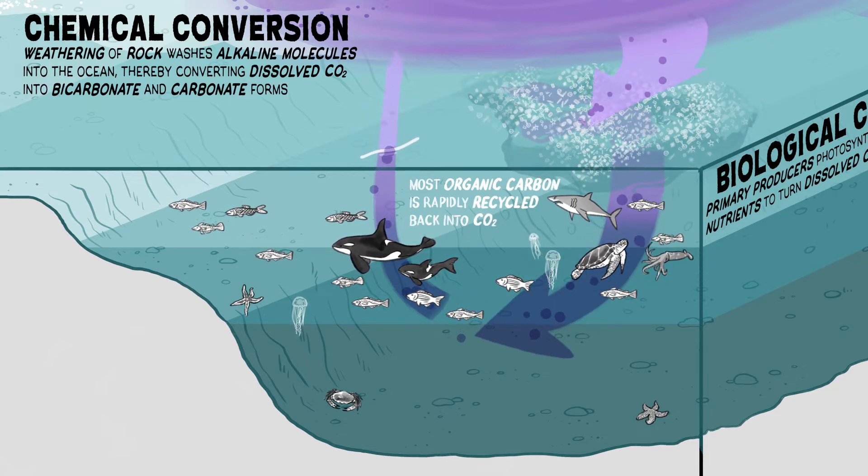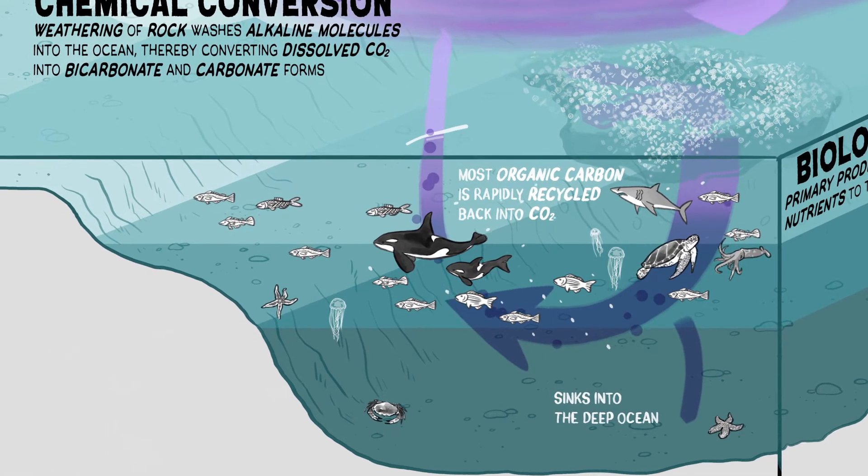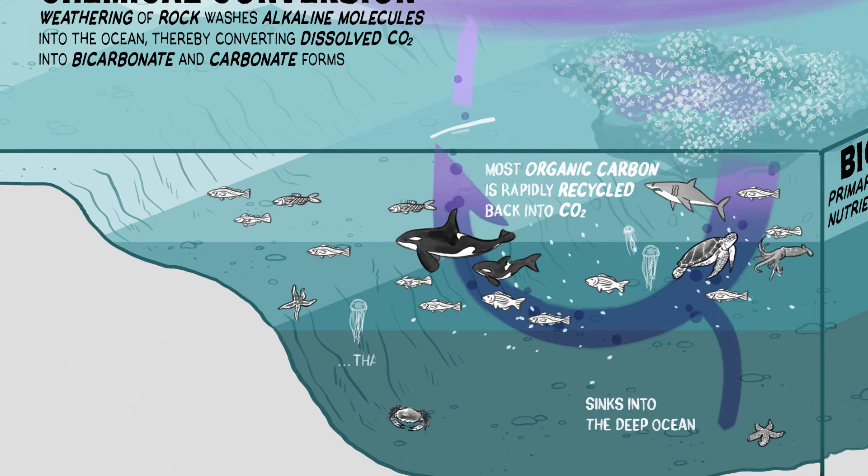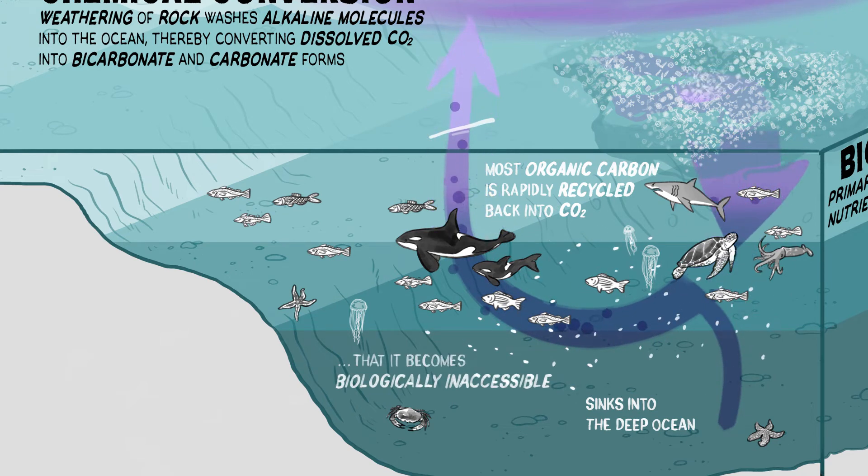However, a small fraction of organic carbon escapes the food web and is sequestered in the ocean. This includes organic matter that sinks into the deep ocean or is structurally so complex that it becomes inaccessible to microbes and is sequestered in the ocean for thousands of years.